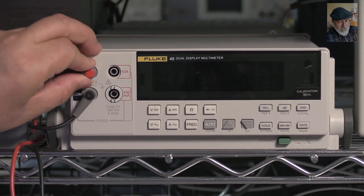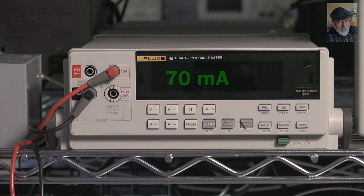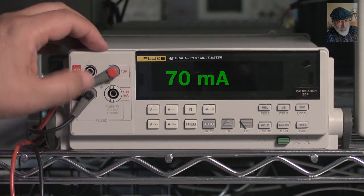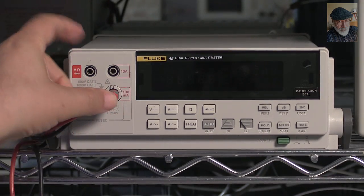First, to be on the safe side, plug the red probe to the 10A socket. If the reading turns out to be less than 100mA, then turn off the multimeter and move the probe to the 100mA socket.